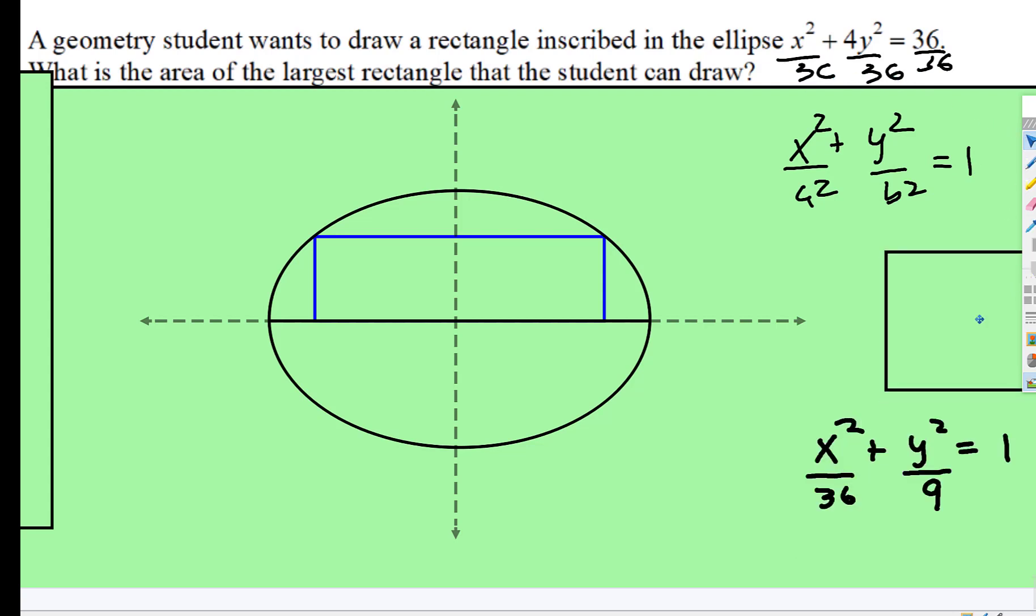And when we do that, remember the x distance is the square root of that. So each side, we go over 6, so here's negative 6, here's positive 6. So that distance, that x distance is 6. And then the height is the square root of 9, so this height is 3.